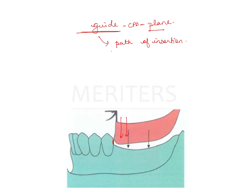You cannot tilt the denture too much because the mouth opening is restricted. You need to have a predetermined path of insertion so that the denture goes back in its place and doesn't come out. It should not have multiple paths of insertion — this guide plane ensures that the path of insertion is taken care of.